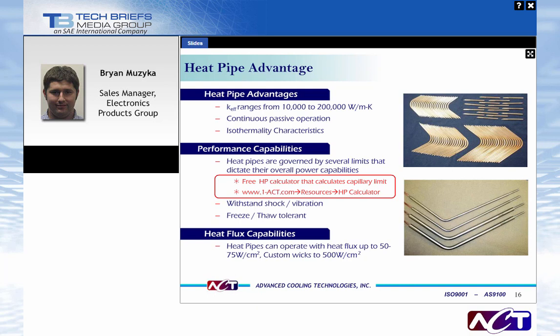Heat pipes are governed by several limitations. The biggest from a design perspective is the capillary limit, which is typically the first limit you'll hit in terrestrial systems. This is basically the wick's ability to overcome the various pressure drops in the system — the capillary pressure must be higher than your vapor pressure drop, liquid return pressure drop, and the pressure drop from gravity. When we design heat pipes, we look at the worst-case orientation and design accordingly. Tools available include the heat pipe calculator and a design guide for sizing and fitting heat pipes into your system.